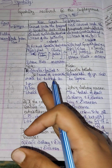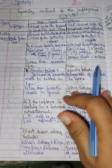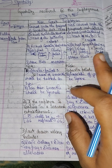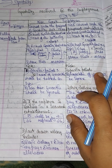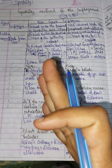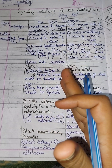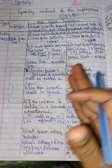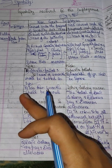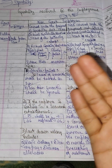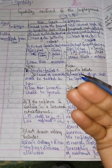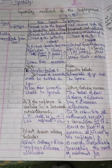So this is the gratuity format for both covered and not-covered employees. In the next video we will explain problems based on the Gratuity Act of 1972. Thank you guys, thanks for watching.